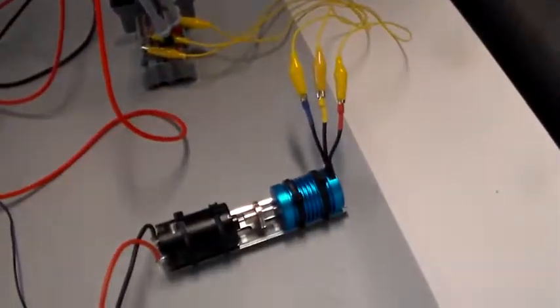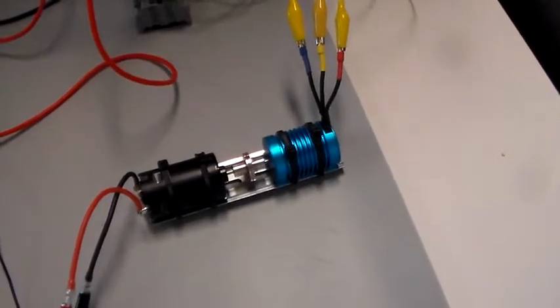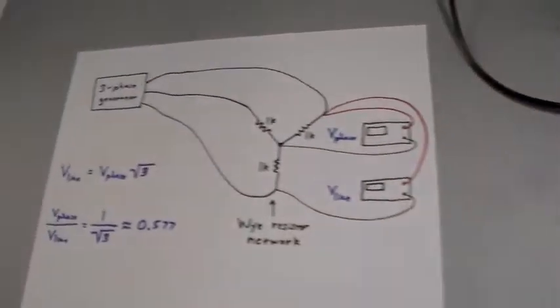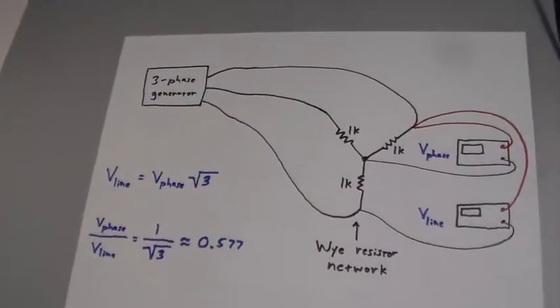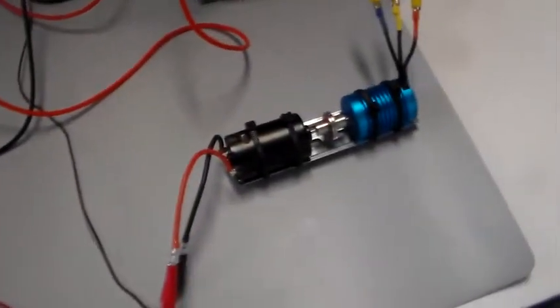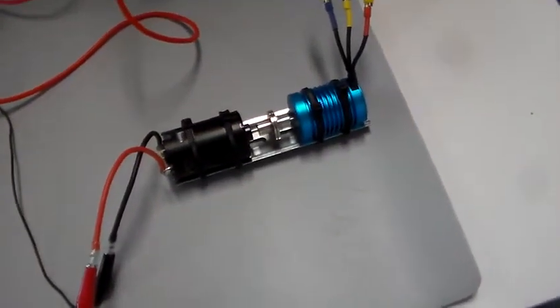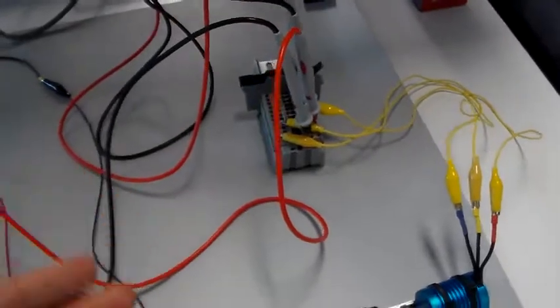So it's a good demonstration of three-phase Y-type networks and the relationship between line quantities and phase quantities. And, again, it's safe and easy to do using these inexpensive parts and the setup with the resistor network and two voltmeters.